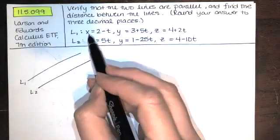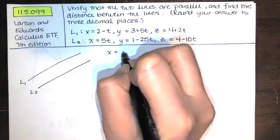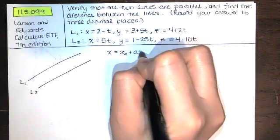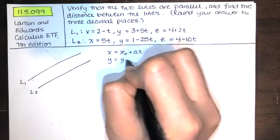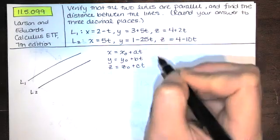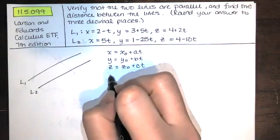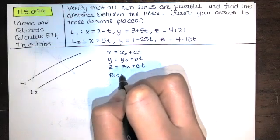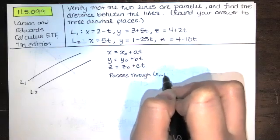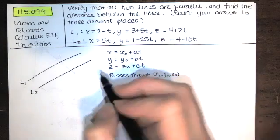The parametric equations for the lines are x = x₀ + at, y = y₀ + bt, and z = z₀ + ct. This describes a line that passes through the point (x₀, y₀, z₀) and has direction vector with components a, b, and c.